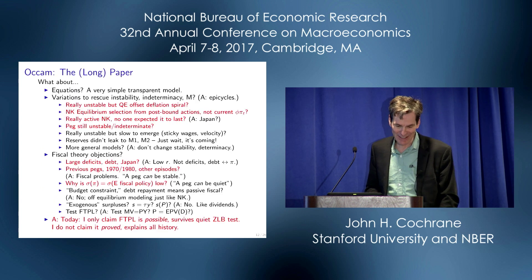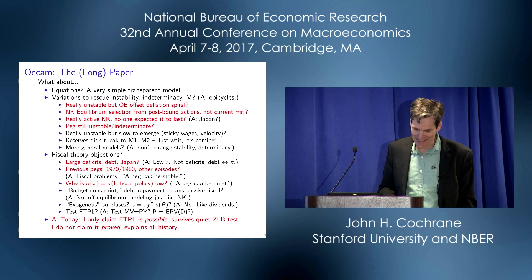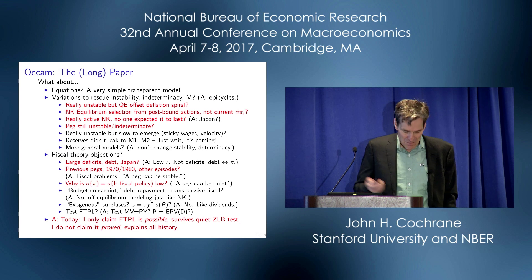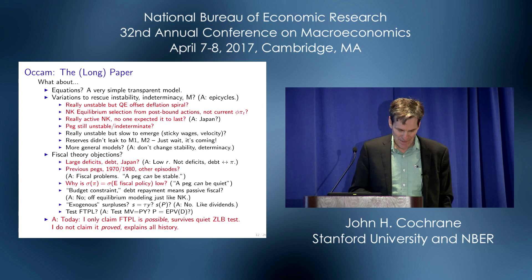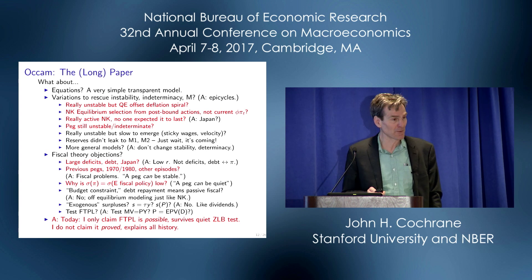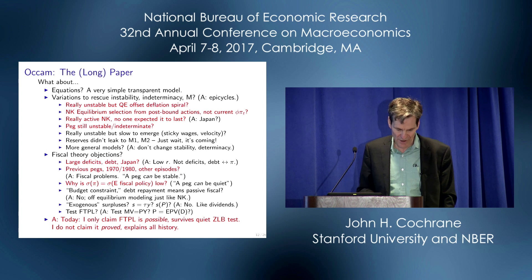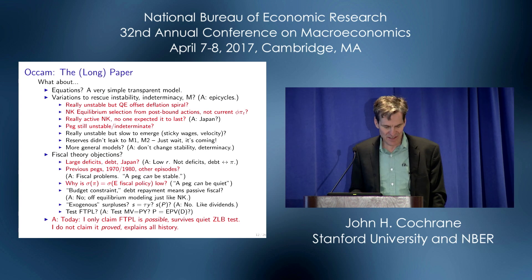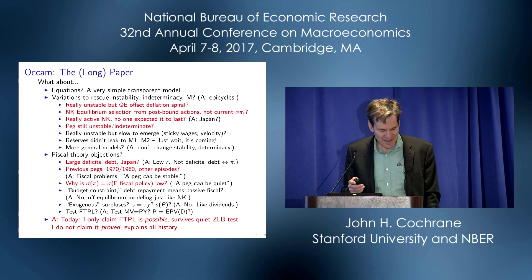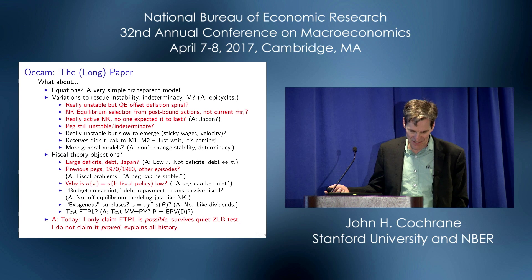The paper is really long — to answer about half of the questions and objections you likely already have. Maybe the economy really is unstable after all, but the Fed skillfully offset the deflationary spiral with hyperinflationary quantitative easing. Maybe expected future active policy can cut off multiple equilibria in a way it didn't in the 1970s. Maybe nobody expected the zero bound to last, so Taylor principle selection was still working all along. These are all possible but complex ex-post patches, and they start to look like epicycles and ether drift. Maybe it's time to take Occam's advice and just use the really simple answer sitting on the plate before us.